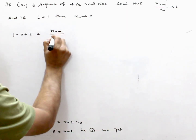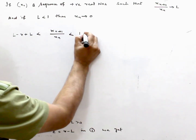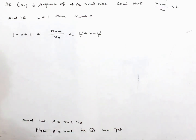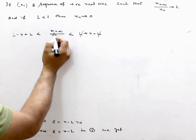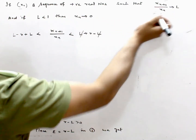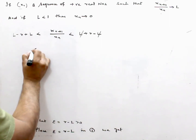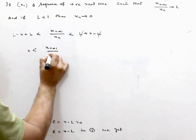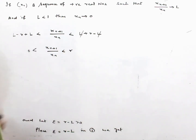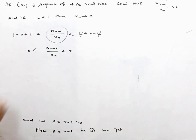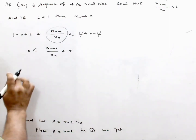...xₙ₊₁ / xₙ is less than L plus (R minus L), and this L will cancel. Because xₙ is positive, xₙ₊₁ is also positive. So we get xₙ₊₁ / xₙ less than R, because xₙ is positive as given.